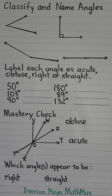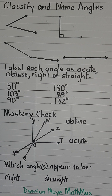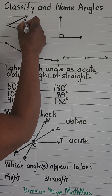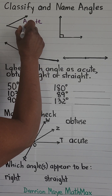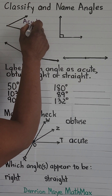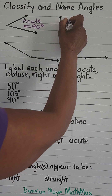Welcome to 'Classify and Name Angles' — fifth grade maths. Our first angle is an acute angle, and it measures less than 90 degrees. Acute: less than 90 degrees. Next, we have a right angle.